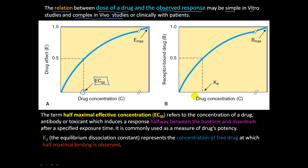There's another concept that has similarities to the EC50, which is the KD. The KD is the equilibrium dissociation constant, and that represents the concentration of free drug at which half of the maximal binding is observed. So let's say we have a thousand receptors. The KD represents what is the drug concentration when 500 of those receptors have the ligand, have that drug attached to them, the receptor bound drug.